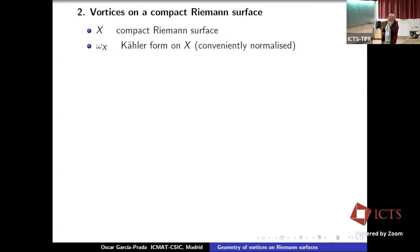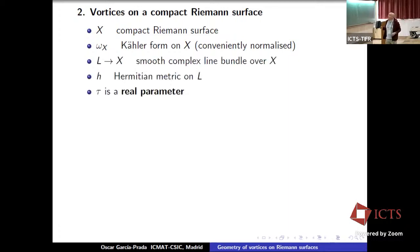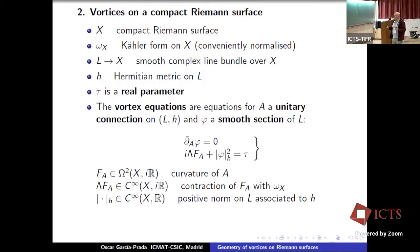We have a smooth complex line bundle L over X, and H is a Hermitian metric on L — a Hermitian metric on each fiber. The pair (L, H) is what Nuno called L̄ today. Now τ is a real parameter. We have the vortex equations for this value of the parameter: equations for a unitary connection on the Hermitian line bundle (L, H), where φ is a smooth section of L.